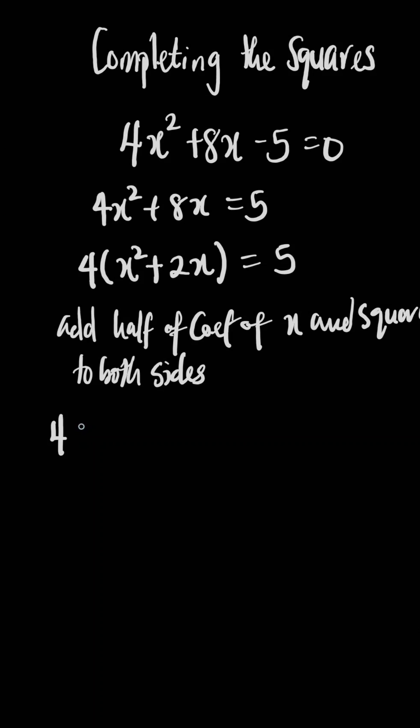we're going to have 4 into bracket x² + 2x plus half of the coefficient is half times the coefficient, which is 2. And we're going to square it, equal 5.